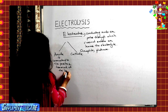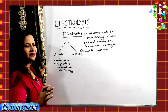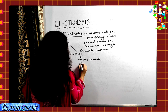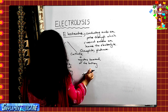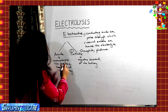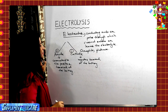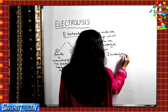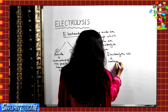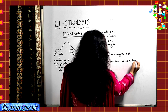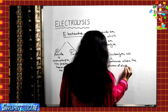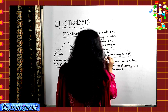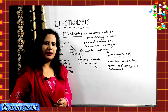The anode is connected to the positive terminal of the battery - it is the positively charged electrode. The cathode is connected to the negative terminal of the battery - it is the negatively charged electrode. The electrolytic cell is the container where the process of electrolysis is carried out. Inside it we have the electrolyte and the two electrodes, cathode and anode.